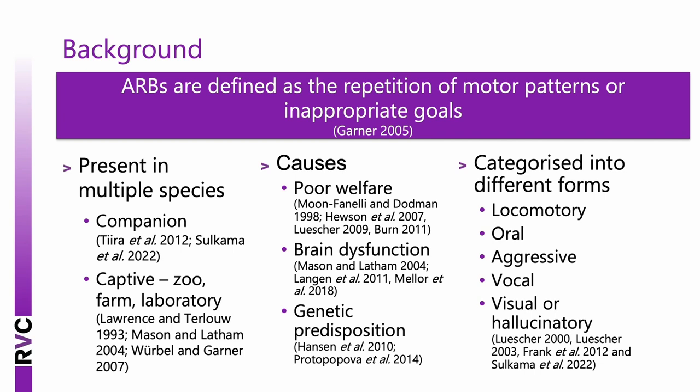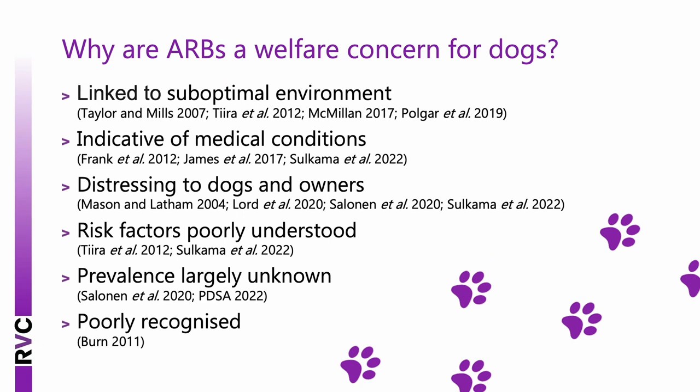In dogs, ARBs are linked to suboptimal environments such as frustration or boredom, and can be an artefact of previous poor welfare — for example, in utero stress can cause brain dysfunction. They can also indicate medical conditions: seizures and GI problems have been connected to fly snapping; hallucinations due to eye problems with light and shadow chasing; and tail chasing can be due to pain in the back and tail region. ARBs are distressing to dogs and their owners, increasing the risk of inappropriate punishment, relinquishment, and sometimes behavioural euthanasia, and can interfere with normal activities.